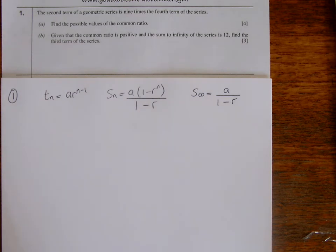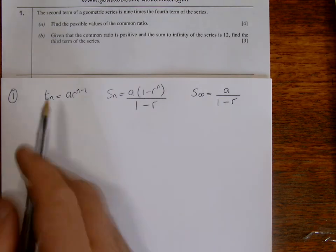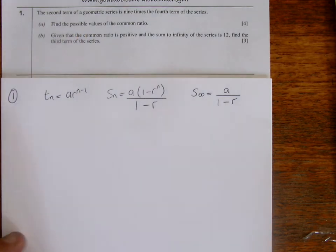So we've got the second term of a geometric series is nine times the fourth term of the series. In part A, it says find the possible values of the common ratio.